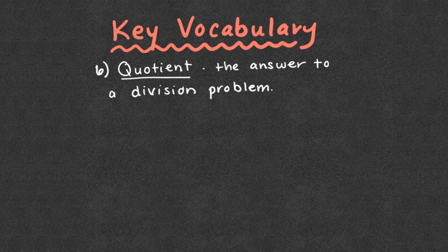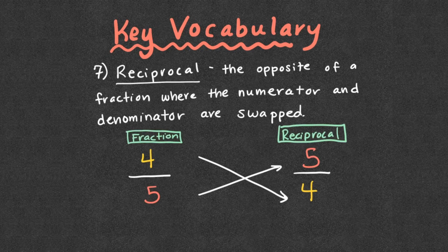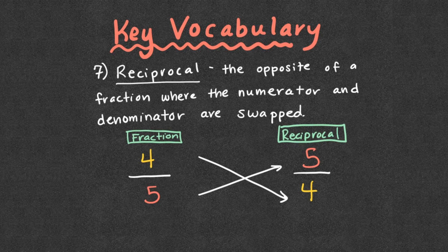For division, we have quotient, which is the answer to a division problem. So if we had 20 divided by four is equal to five, five would be the quotient. And we have the word reciprocal — you're going to hear me say that a few times. It is the opposite of a fraction where the numerator and denominator are swapped. The original fraction four-fifths has a reciprocal of five-fourths.